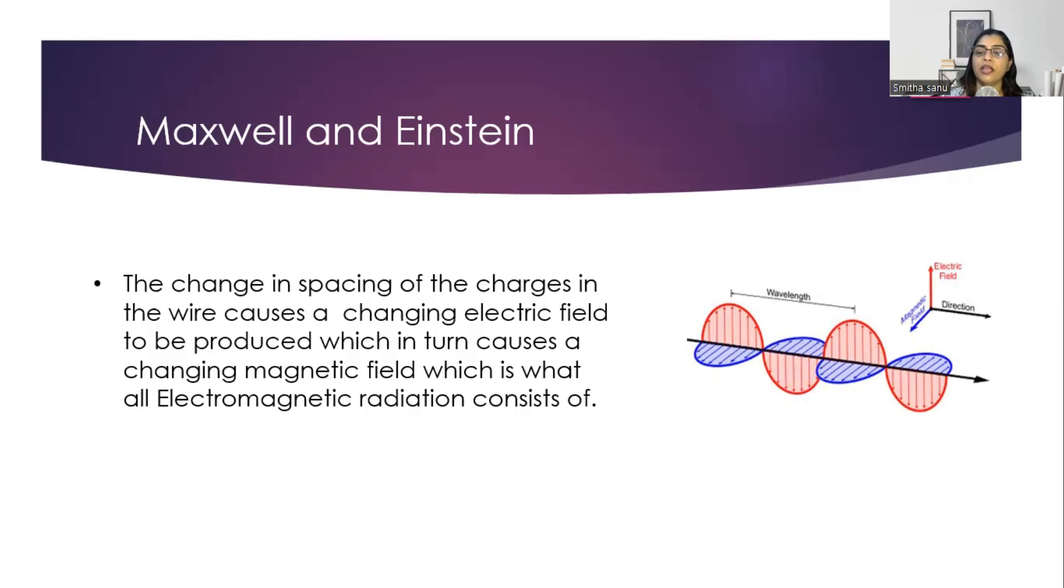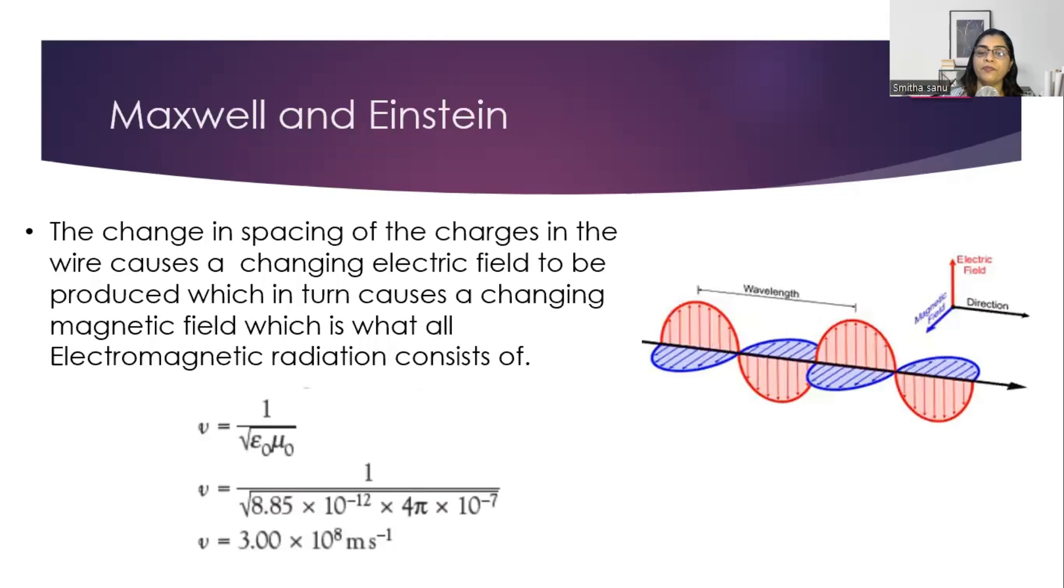Thus, Maxwell explained the concept of electromagnetic waves, which is basically the light waves. He later came forward with four set of equations, called Maxwell's equations. And he also proved that 1 over square root of two constants, which is permittivity of free space times permeability of free space, gives you a value which is 3 times 10 to the power 8 meters per second. So, we can tell that light moves with a constant speed, which is 3 times 10 to the power 8 meters per second, which we all know.